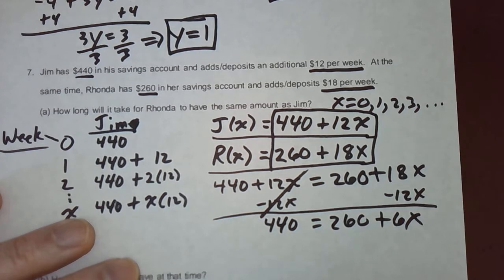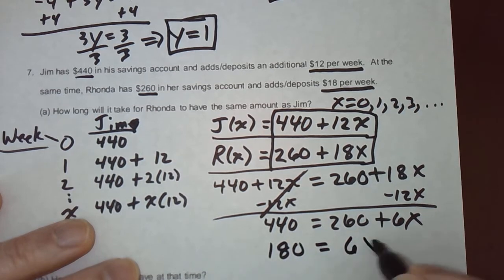Subtract 260 from both sides. And what does that give us? 260 from that would be 180. So, all I did there is subtract 260 from both sides.